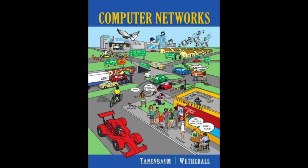In the real world, the transport layer fulfills the key function of isolating the upper layers from the technology, design, and imperfections of the network. Many people make a qualitative distinction between layers 1 through 4 on one hand and all layers above 4 on the other. The bottom four layers can be seen as the transport service provider, whereas the upper layers are the transport service user. This distinction has a considerable impact on the design of the layers and puts the transport layer in a key position as the major boundary between provider and user of the reliable data transmission service.